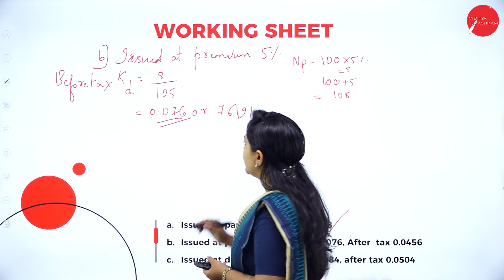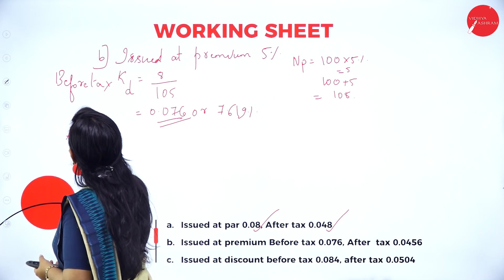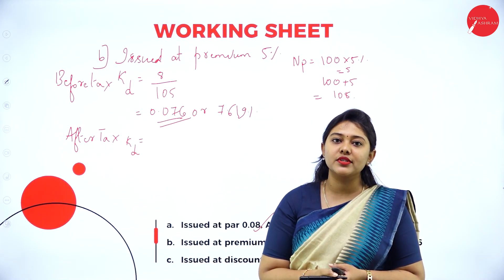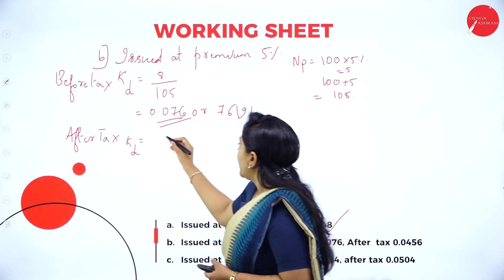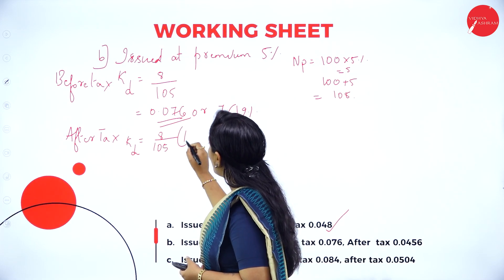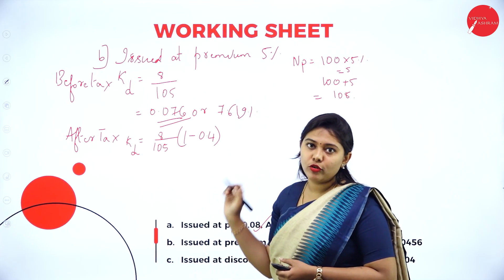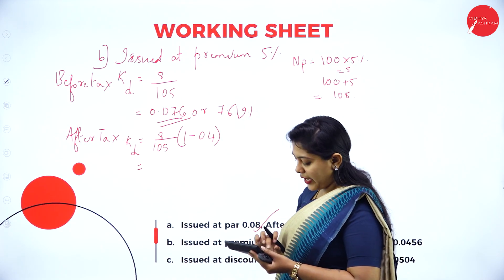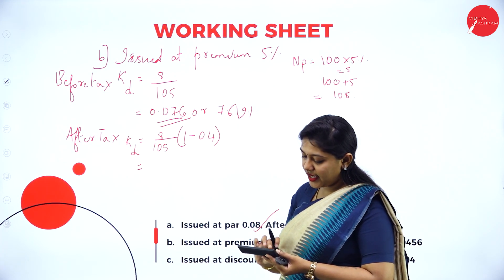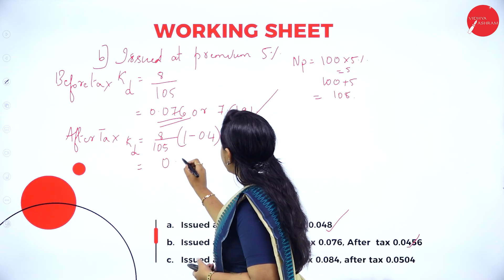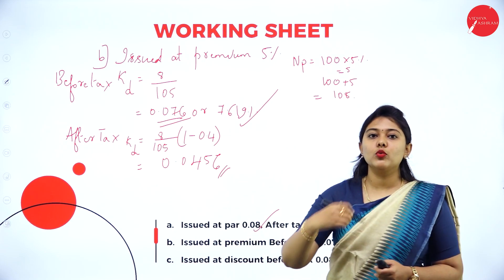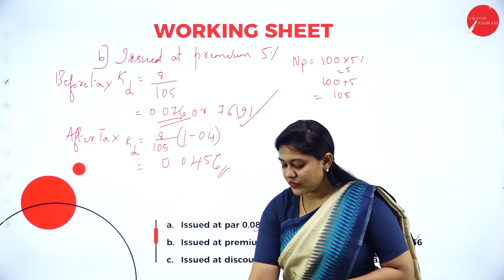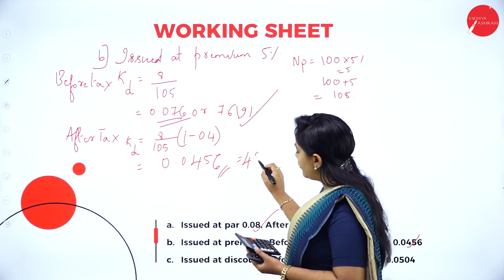After tax formula: cost of debt equals interest divided by net proceeds into 1 minus tax. That is 8 divided by 105 into 1 minus 0.4. Since 1 minus 0.4 equals 0.6, so 8 divided by 105 into 0.6 equals approximately 0.0456. If you want to convert to percentage, 0.0456 into 100 gives around 4.57%.